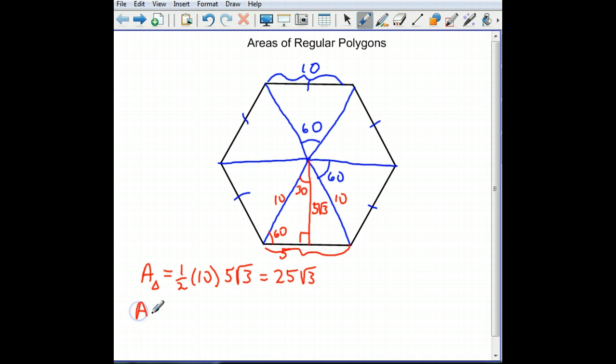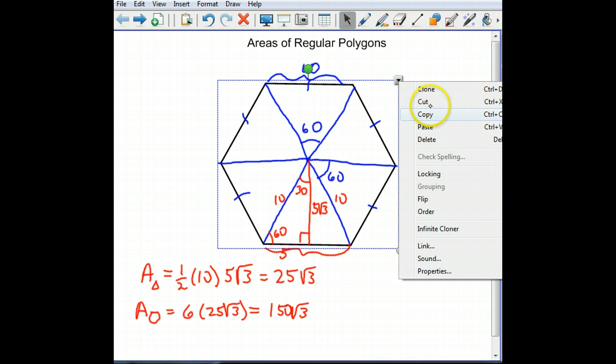The area of the entire polygon, not very good art right there, is going to be six times the area of one triangle because there are six triangles. And we get 150, 150 times the square root of three. Okay, well, we can shortcut this process if we identify some terms.